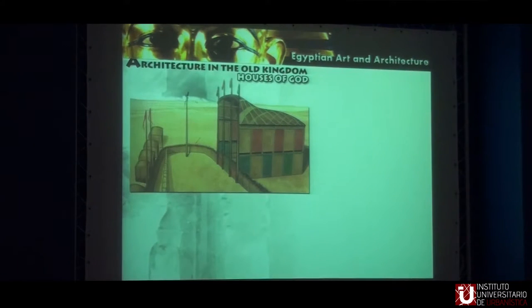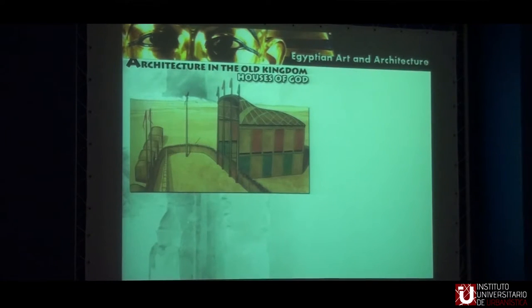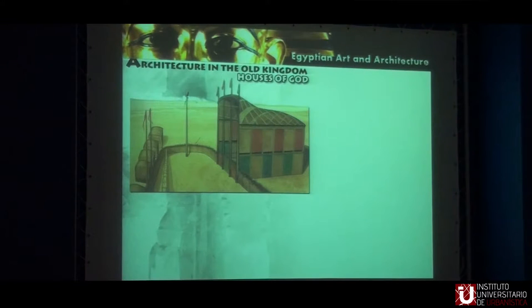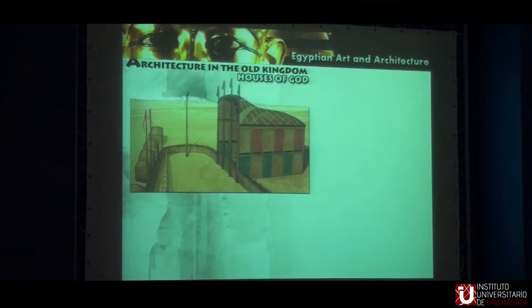Now we're going inside — this was the first part as an introduction. We're going to go quickly through the three different kingdoms: Old, Middle, and New. In each one we'll speak about how it starts as a house of God, then the house of the people, and then the houses of eternity.